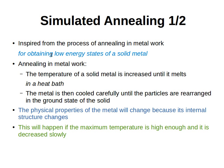The process called annealing is used to obtain low energy states of a solid metal. The way annealing works in metal work is as follows: the temperature of a solid metal is increased until the metal melts. We put the metal in a heat bath and increase the temperature until the metal becomes liquid.